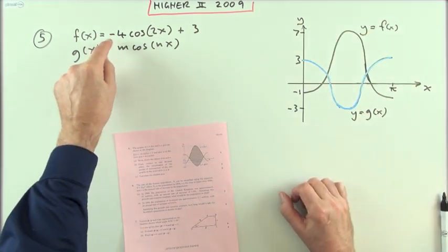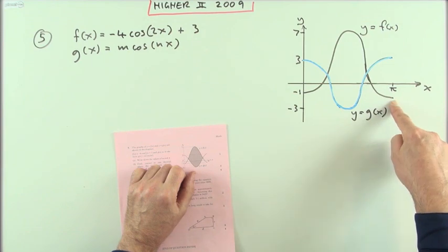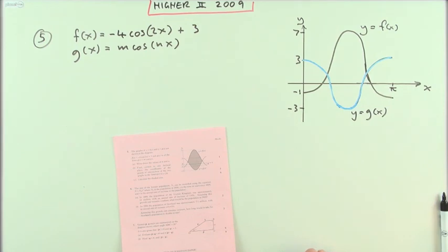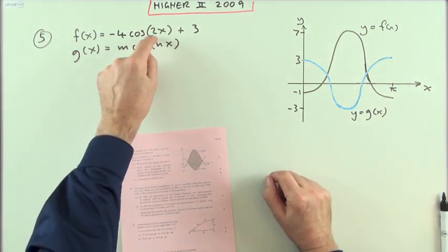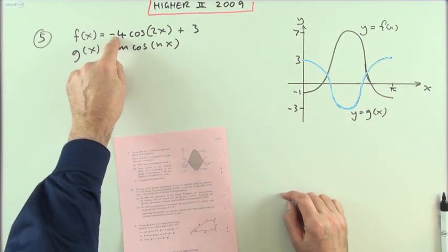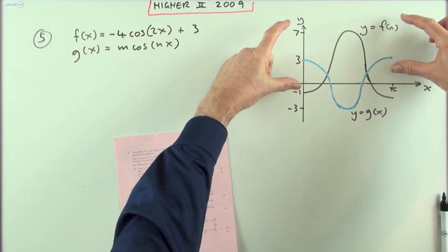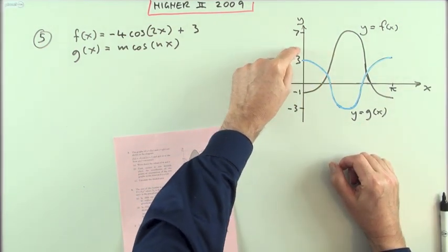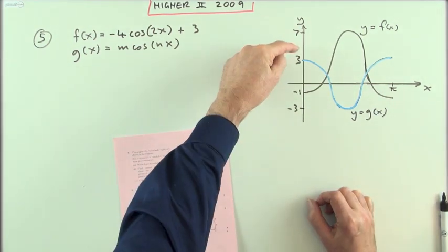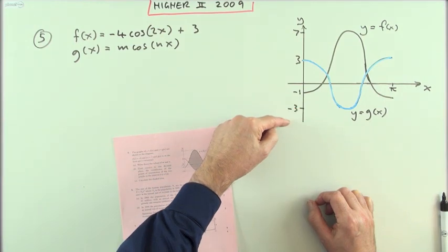So negative four is the amplitude. It completes one wavelength by pi — that's only halfway through a complete cycle; it would take two wavelengths to reach two pi, so it has a frequency of two. With amplitude four, it's not simply going up four and down four — it's been shifted up. Instead of topping at four it goes to seven, so it's been shifted up three. The top should have been at four, it's up at seven; the bottom should have been at negative four, it's lifted up three to negative one.